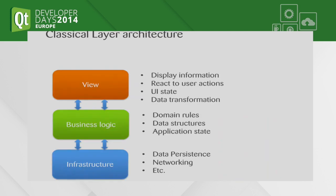This is a classical layer architecture for an application. We can recognize a very classical design pattern. At the bottom, we have the infrastructure layer, which provides basic functionality like data persistence, networking, and so on. On top of that, we have the business logic, which is basically where we program what the application is supposed to do. We put there the main algorithms, the main data structures. If we are doing something like model-driven design, here is where we place the domain model.